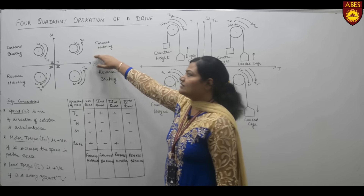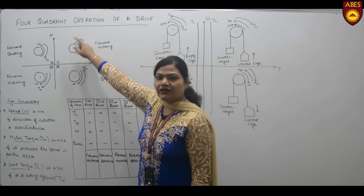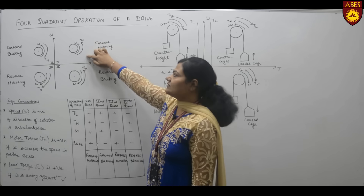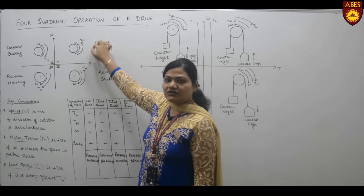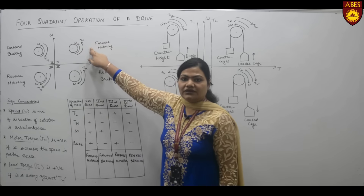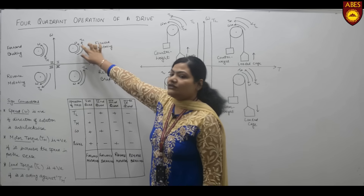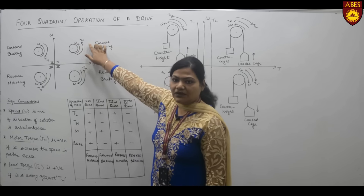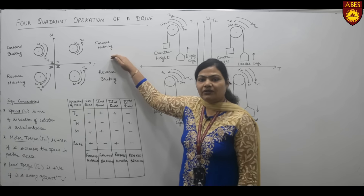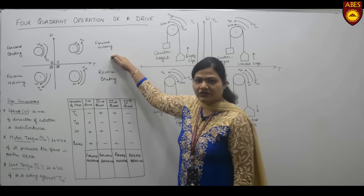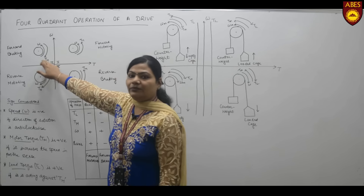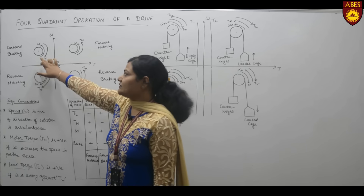In the first quadrant, the speed of the motor is in the anticlockwise direction, so omega is positive. Tm is also in the anticlockwise direction, so it is also taken as positive. In this case, omega multiplied by Tm, that is power, is positive. So this is the forward motoring mode of the drive.